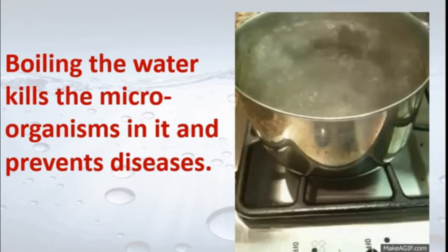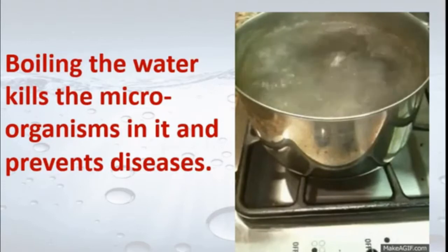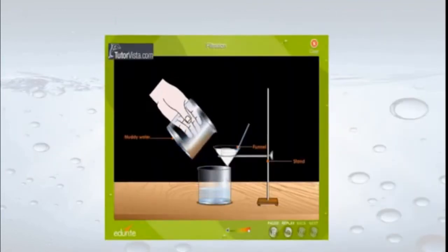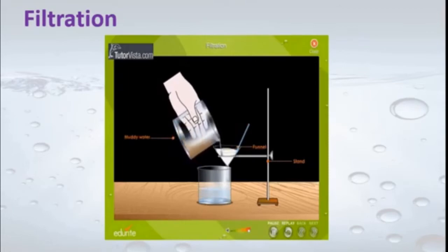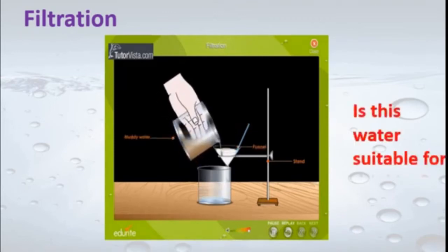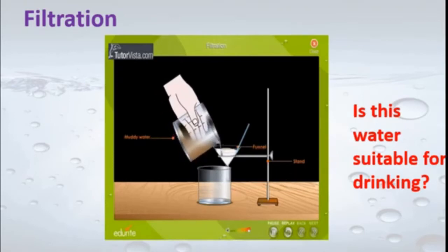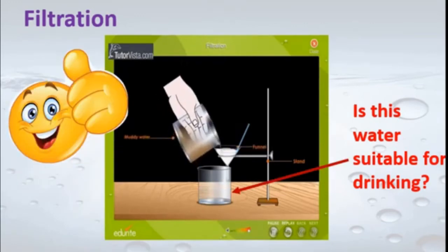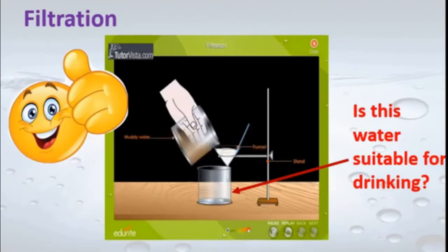After boiling, when the water cools down, we do filtration again. The boiled and cooled water is passed through filter paper or cotton cloth. The clear, transparent, and pure water is collected in the beaker. This water is suitable for drinking and is called potable water — water safe for drinking that does not endanger our health in any way.